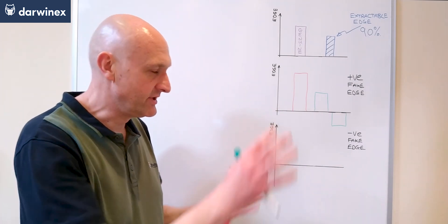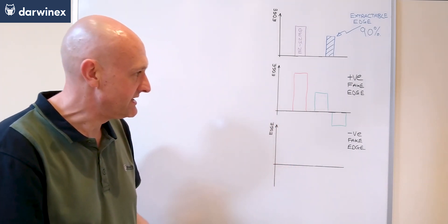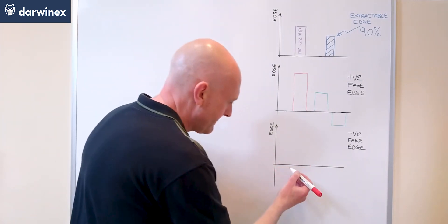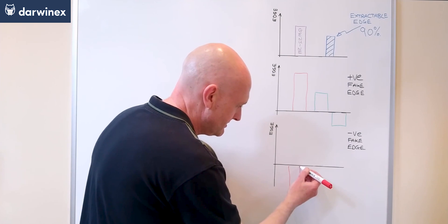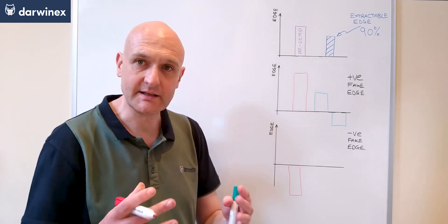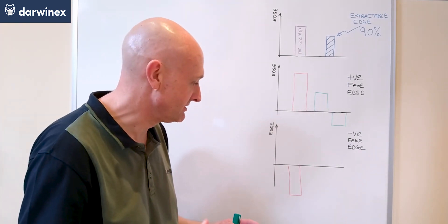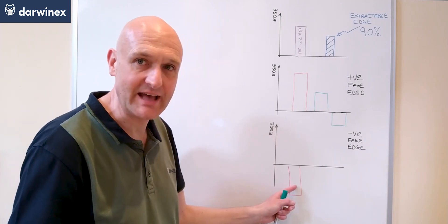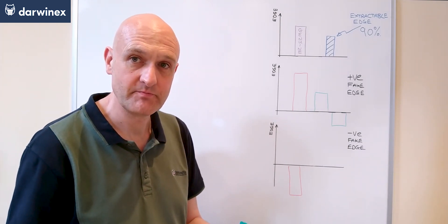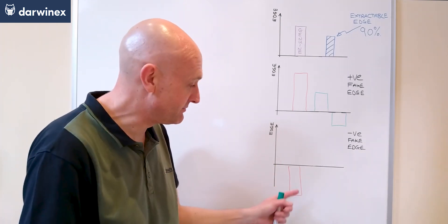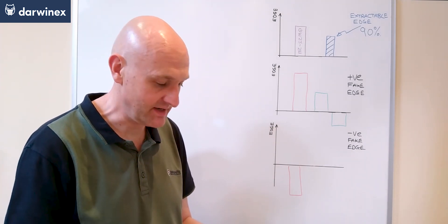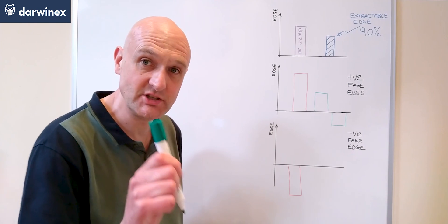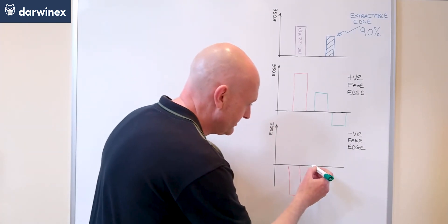Now the other scenario is where a particular parameter set performs badly in the optimization, so the fake edge is negative. However those underlying parameters that gave us that result in the optimization have a genuine edge that is positive.